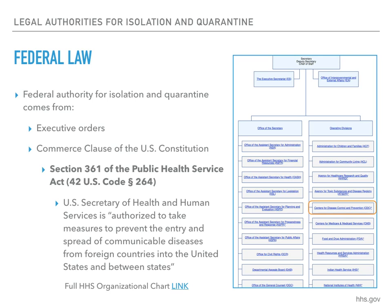The federal government derives its authority for isolation and quarantine from the Commerce Clause of the U.S. Constitution. Under Section 361 of the Public Health Service Act, the U.S. Secretary of Health and Human Services is authorized to take measures to prevent the entry and spread of communicable diseases from foreign countries into the United States and between states. The CDC's authority to exercise quarantine and isolation powers for specific diseases derives from the Federal Public Health Service Act and a series of presidential executive orders, which can range from halting business operations to restricting freedom of movement to limiting civil rights and liberties, and even to commandeering property.